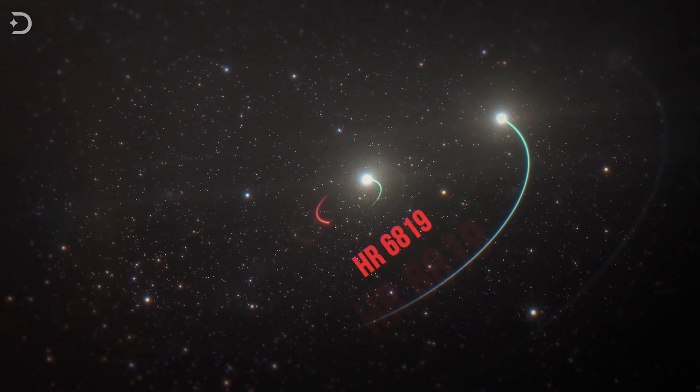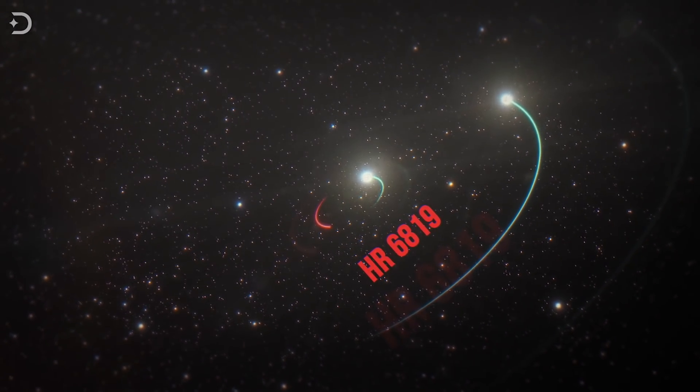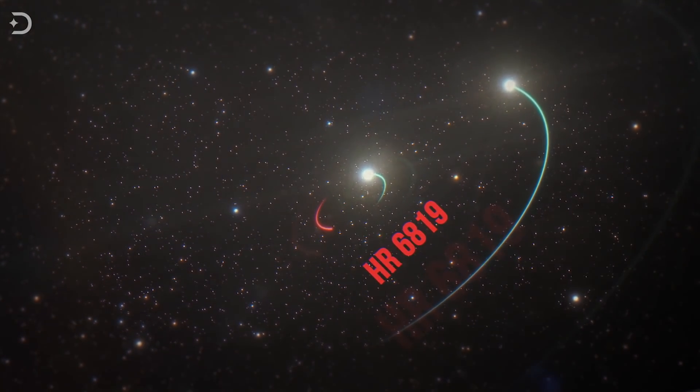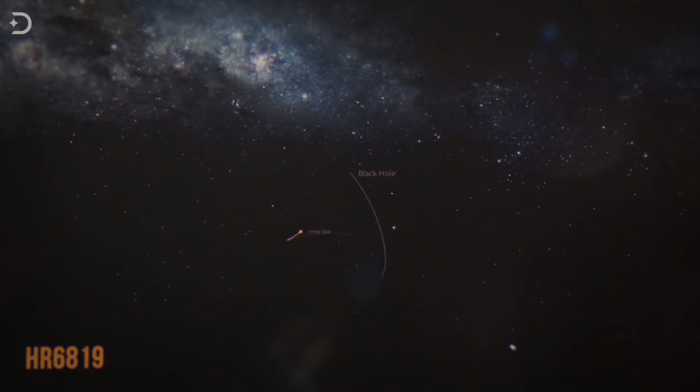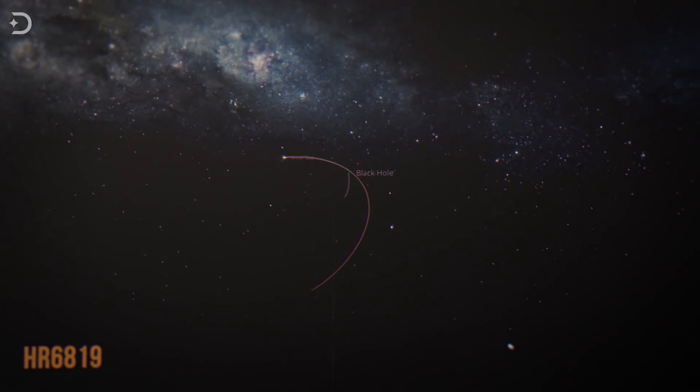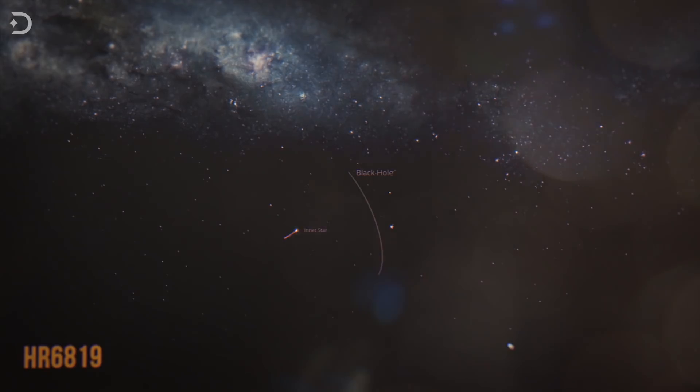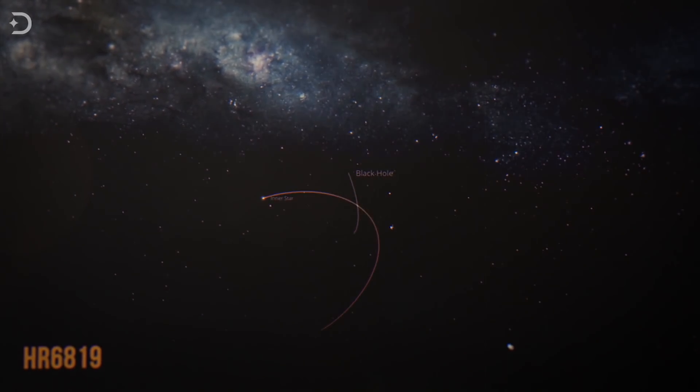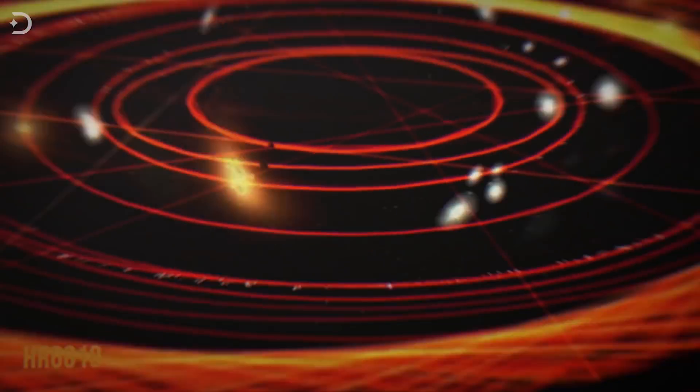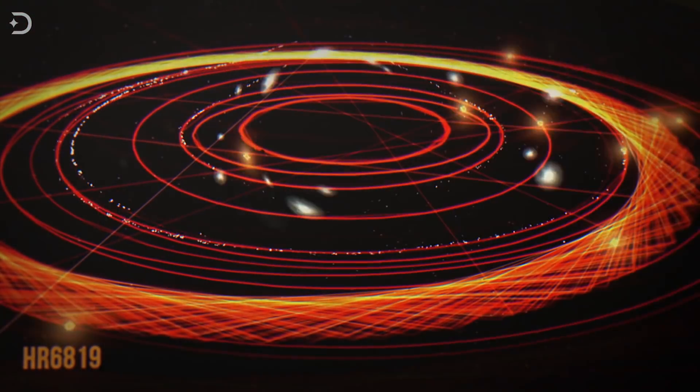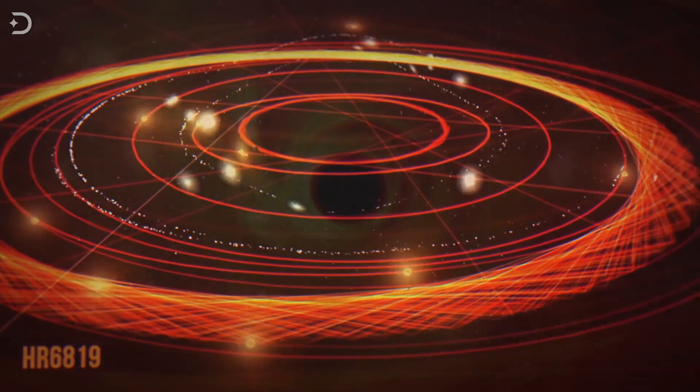HR 6819 is a triple binary system that is made up of two stars that orbit a black hole. At first, it was thought that this was a simple binary system with just two stars orbiting each other. But after analyzing the data, something very unusual was found about the behavior of the inner star of HR 6819.